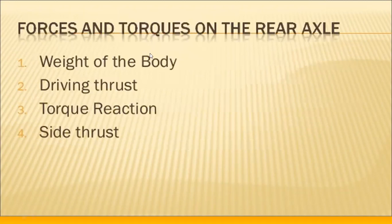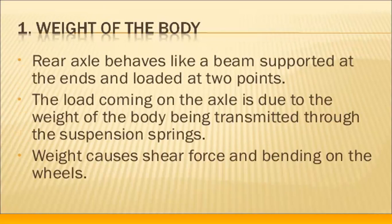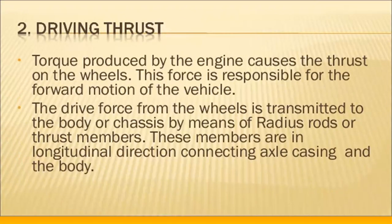What are the different forces and loads developed in the rear axles? Weight of the body, driving thrust, torque reaction, and side thrust. Weight of the body: the rear axles behave like a beam supported at the ends and loaded at two points. The load coming on the axle is due to the weight of the body transmitted through the suspension springs. Weight causes shear force and bending on the wheels. Driving thrust: torque produced by the engine causes thrust on the wheels, and this force is responsible for the forward motion of the vehicle.